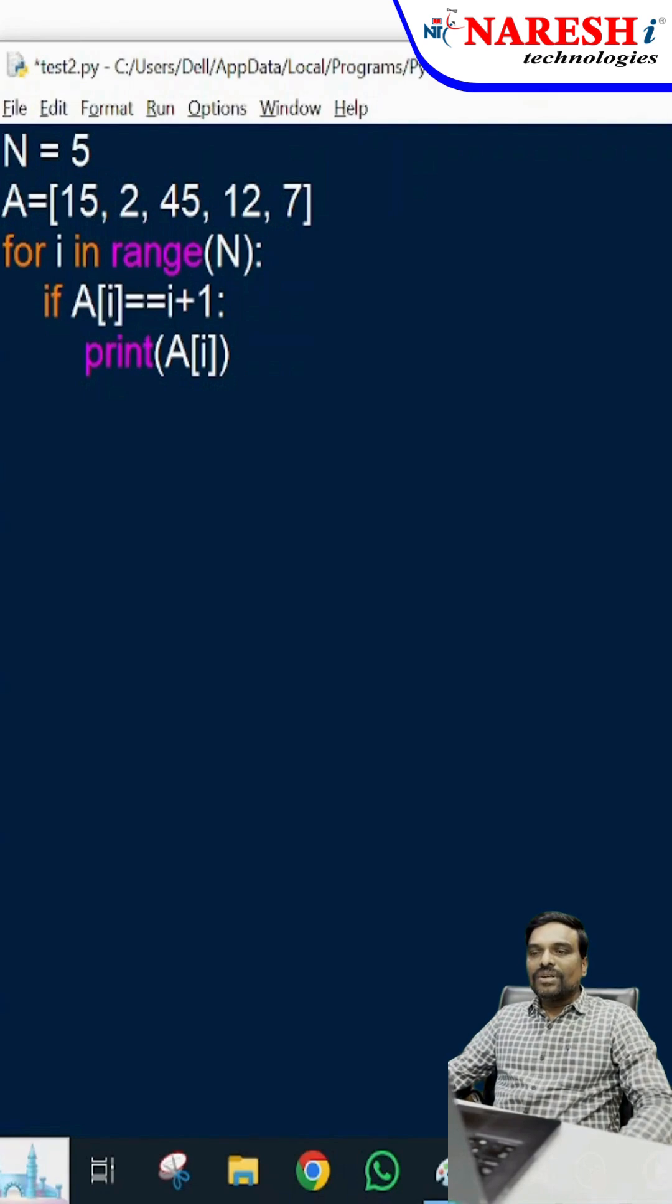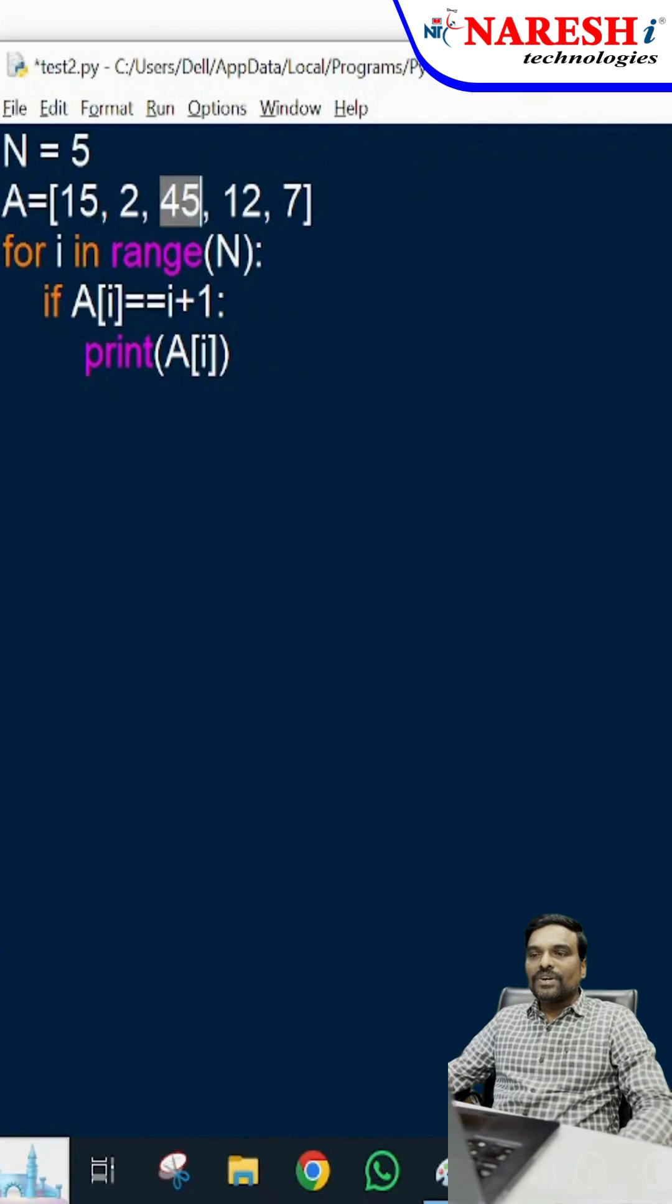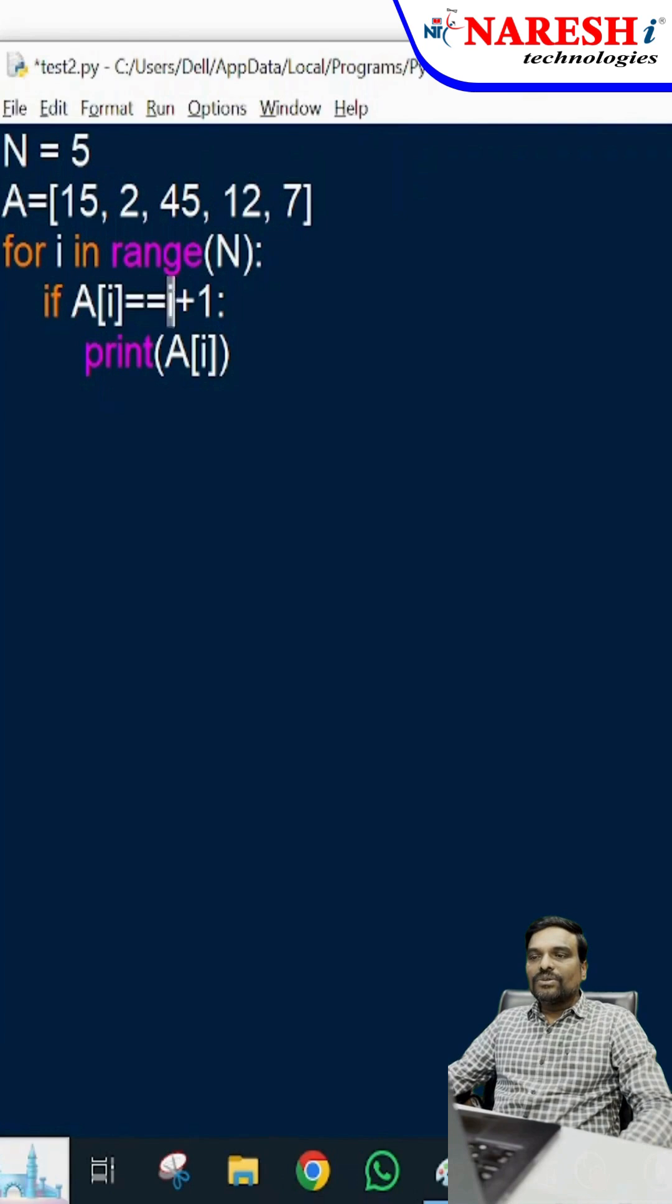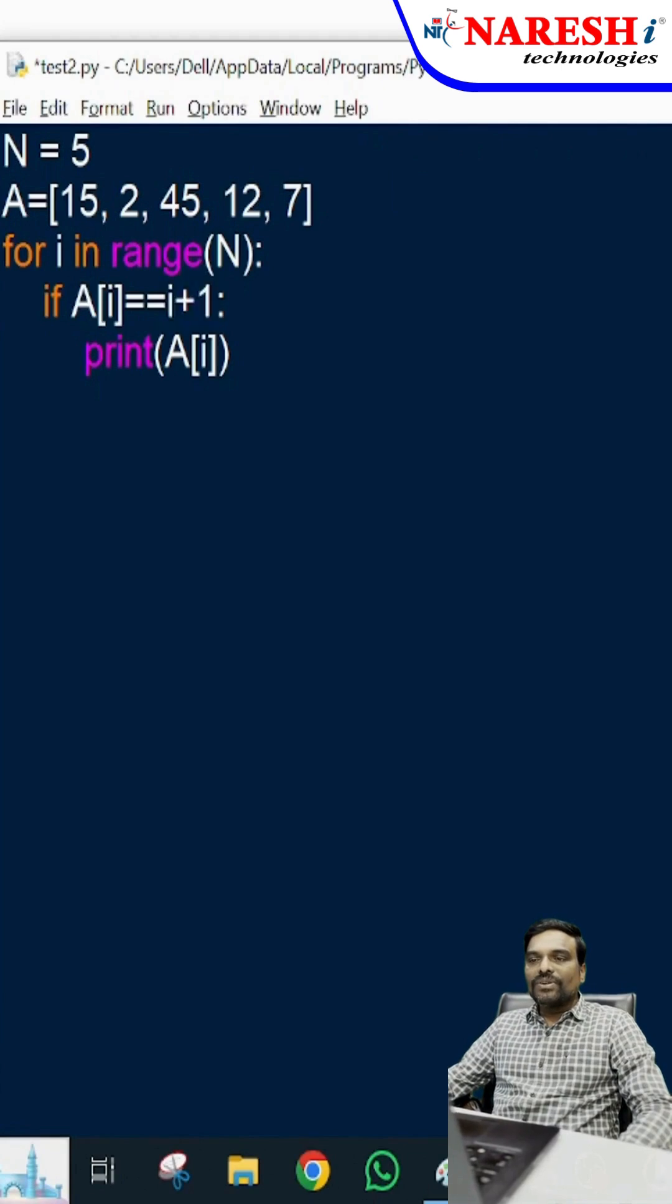Then again you are reading the next element using index 2: 45. 2+1 is 3, but it's not equal. Then you read element 12 overall, and 3+1 is 4, not equal. Again you read 7, and 7 is equal to 4+1, which is 5? Not equal. There is only one element which is equal to index and value: 2.